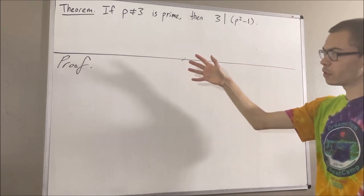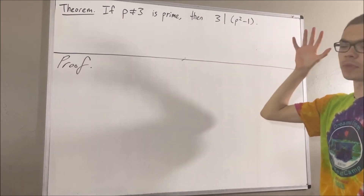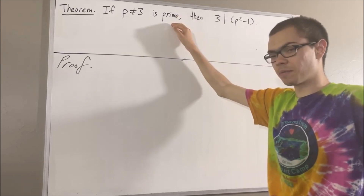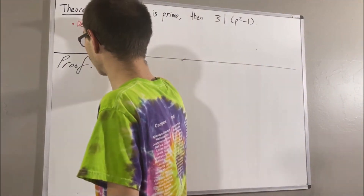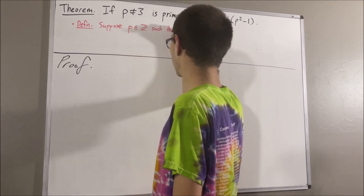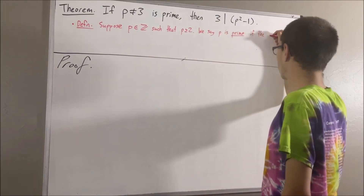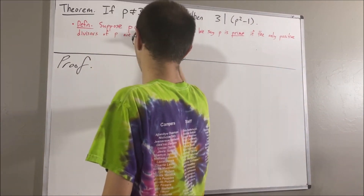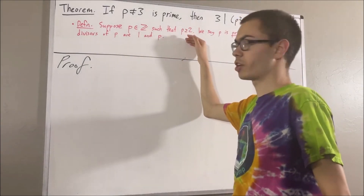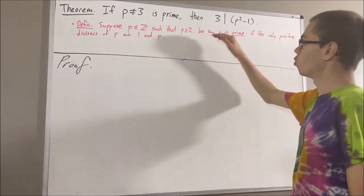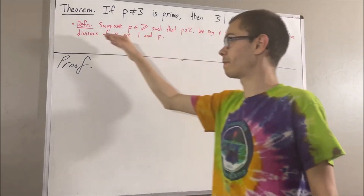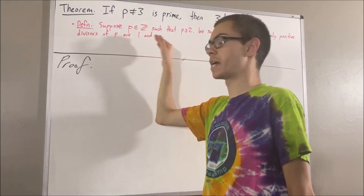Before we get to the proof, let's get some context. We're going to say that our definition of a prime number is as follows: suppose p is an integer such that p is greater than or equal to 2. We say p is prime if the only positive divisors of p are 1 and p.